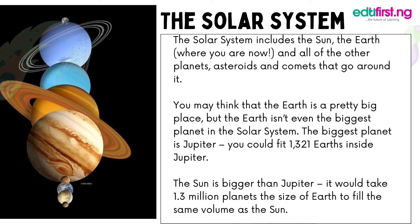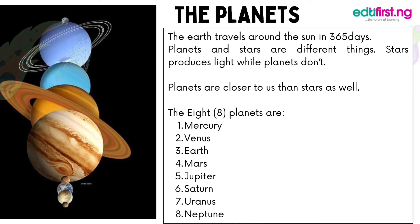The solar system includes the sun, the earth — where we are right now — and all the other planets, asteroids and comets that go around it. You may think that the earth is a pretty big place, but the earth isn't even the biggest planet in the solar system. The biggest planet is Jupiter and you could fit 1,321 earths inside Jupiter.